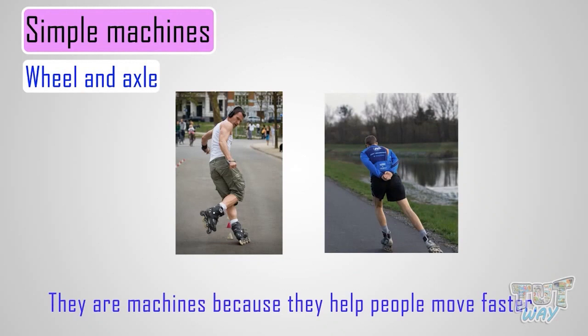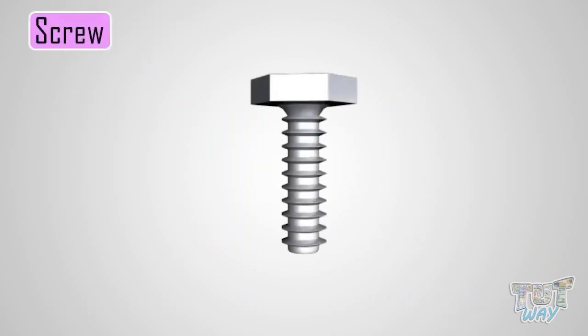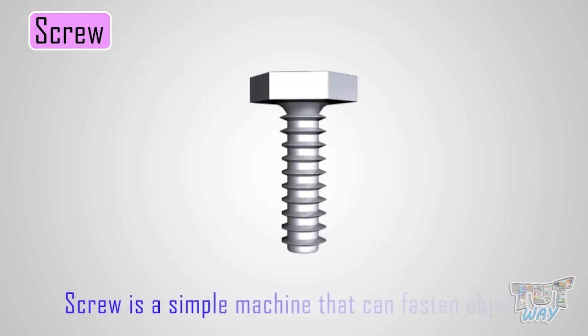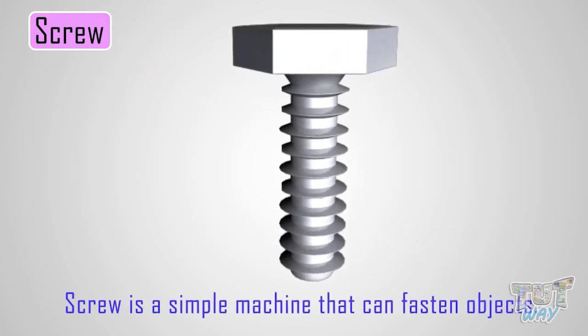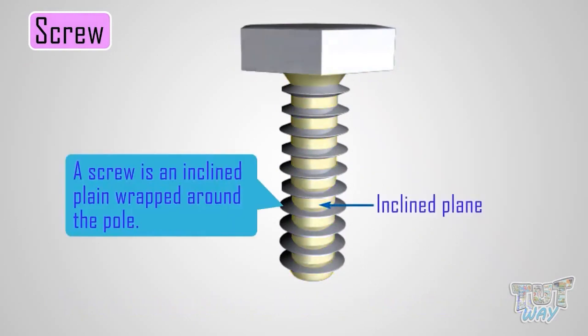Now let's learn another simple machine which is a screw. A screw is a simple machine that can fasten objects. A screw is an inclined plane wrapped around a pole which holds things together or lifts materials.